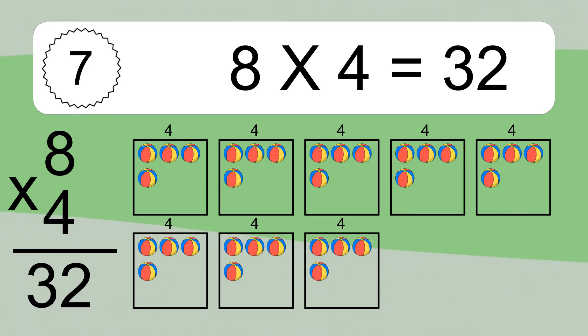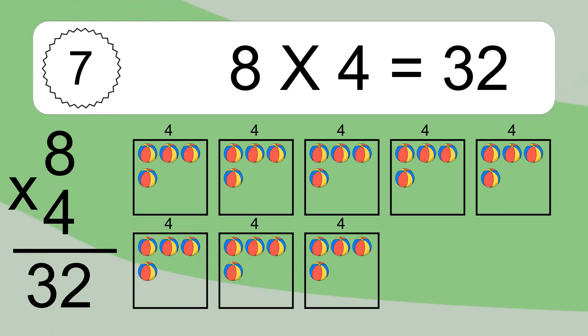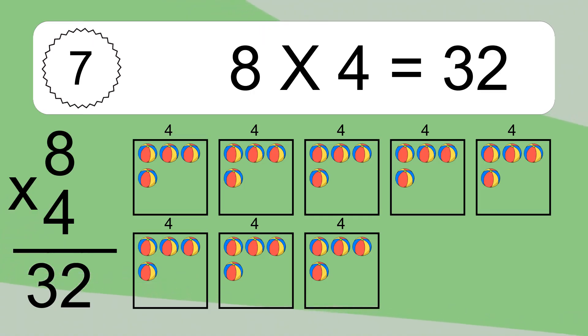We have 8 boxes, and each box has 4 colorful balls inside. If you count all the balls in all the boxes together, you will have 8 times 4 balls. This equals 32 balls.